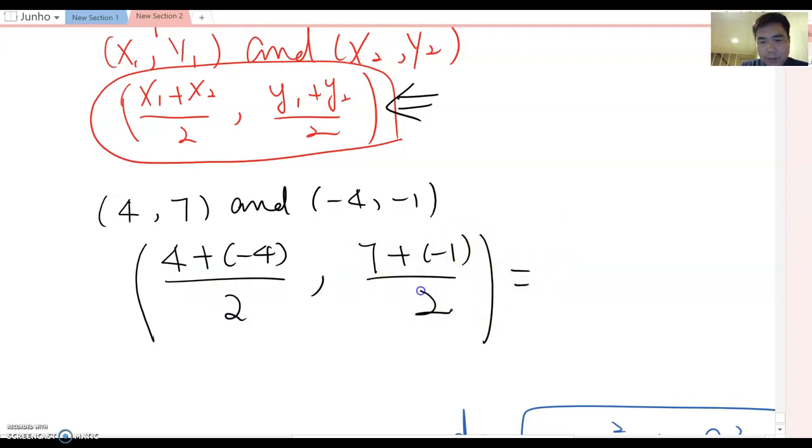So this becomes 4 plus negative 4 over 2, and then 7 plus negative 1 over 2. Therefore, the midpoint becomes 0 over 2 comma 6 over 2. So the answer becomes 0 comma 3 here.